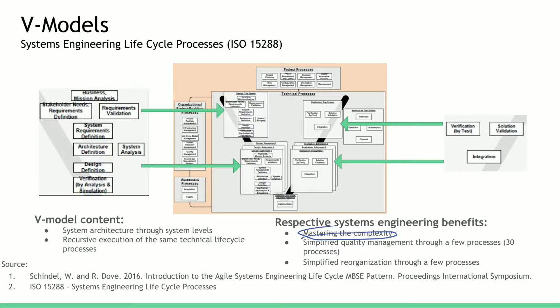These systems engineering benefits are not possible without system levels and without recursive execution of the same 14 technical engineering life cycle processes presented in the model.